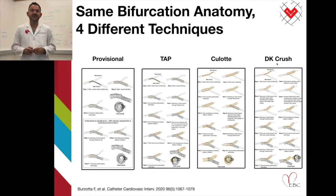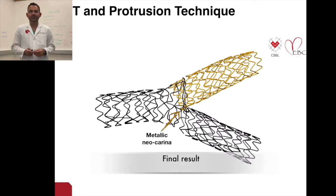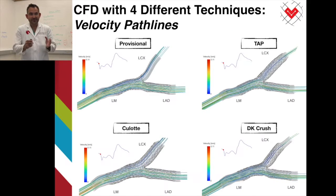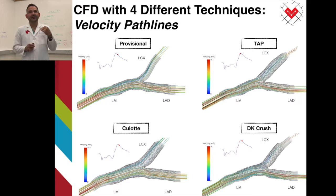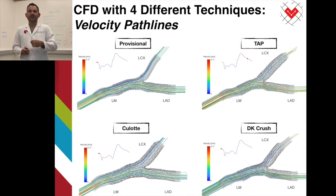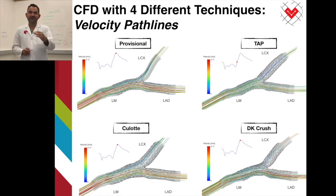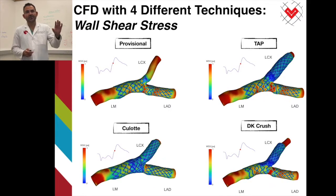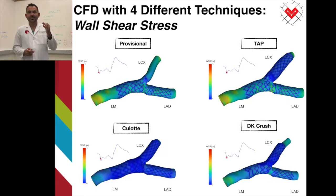We follow the steps published in our recent white paper by the EBC. This is the provisional technique — TAP protrusion with the metallic neocarina. The only thing that changes in each bifurcation anatomy is the stent technique — culotte and DK crush. For each anatomy and every technique, we calculate with CFD the flow distribution across the stent segment. You can see the flow distribution with the provisional technique, with the TAP protrusion, culotte, and DK crush. You appreciate the flow acceleration across the stent segment during diastole. We also calculate the shear stress distribution across the stent segment — the same anatomy, the same bifurcation, stented with four different techniques — so that we can compare apples to apples in a head-to-head comparison.